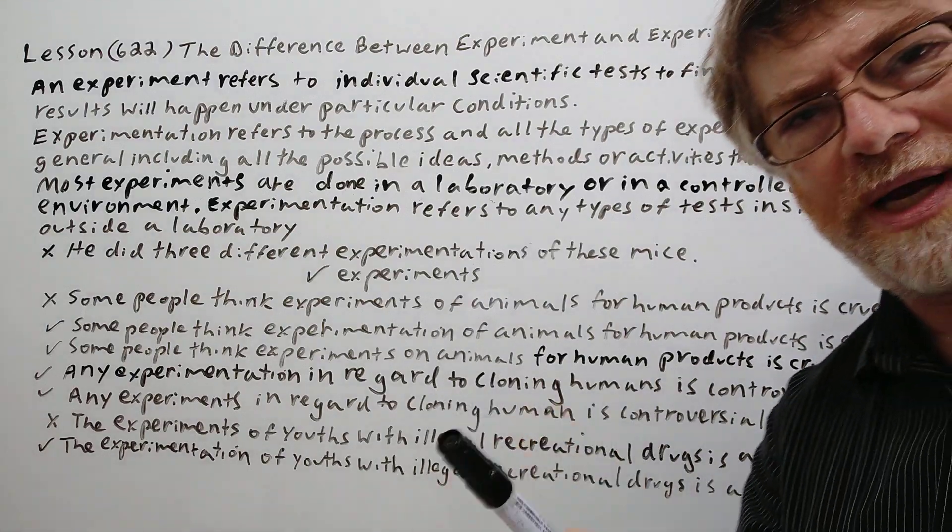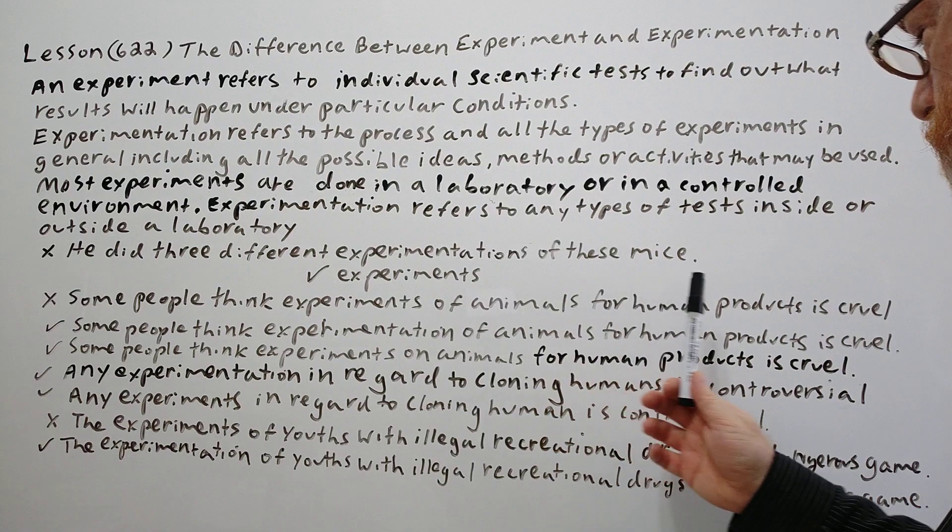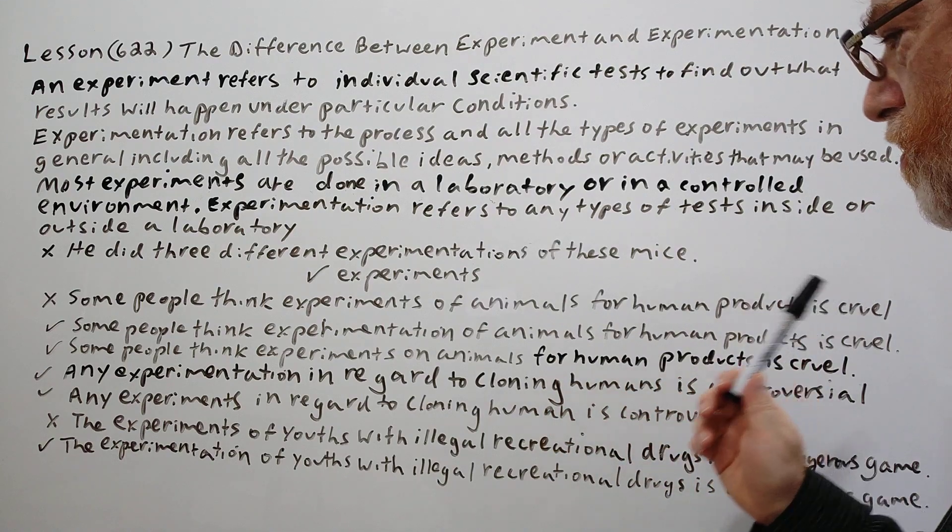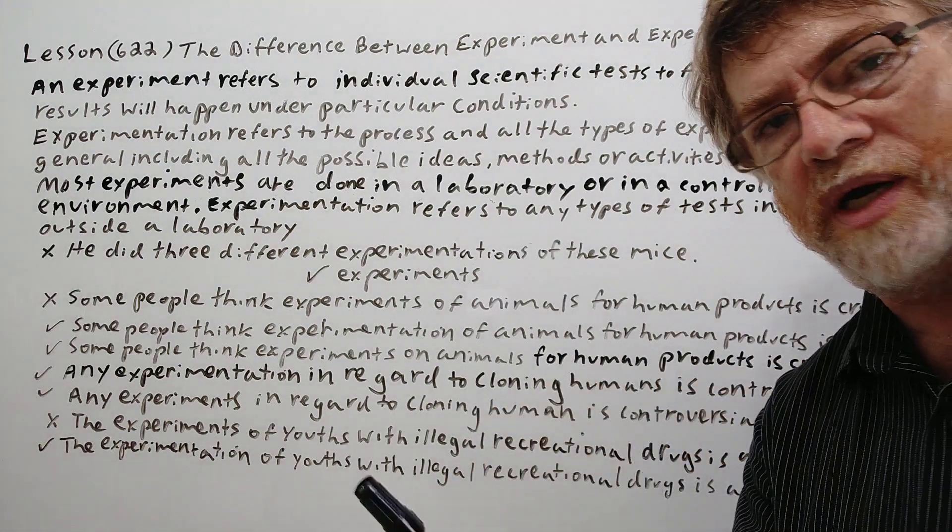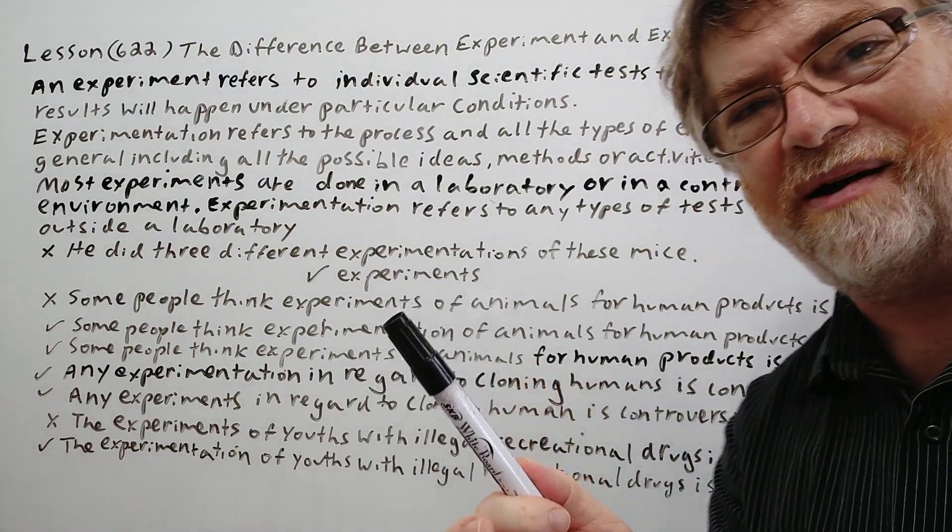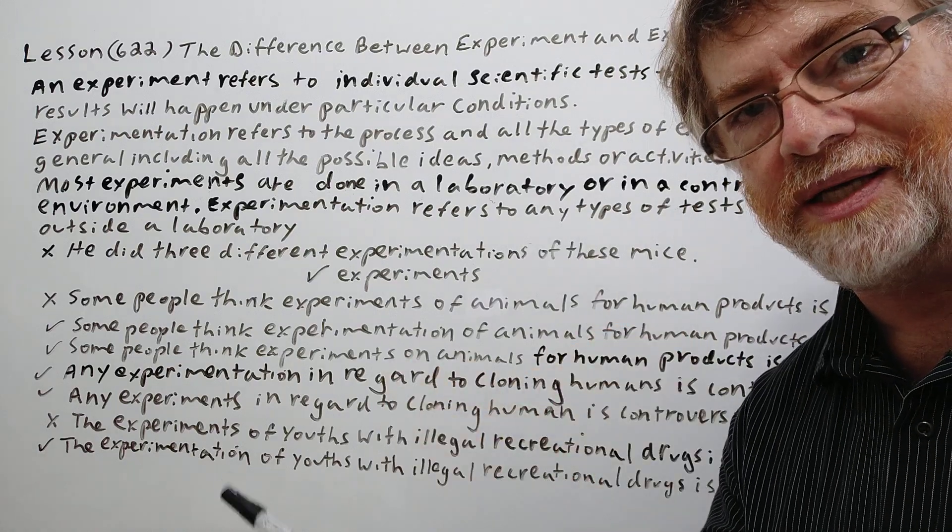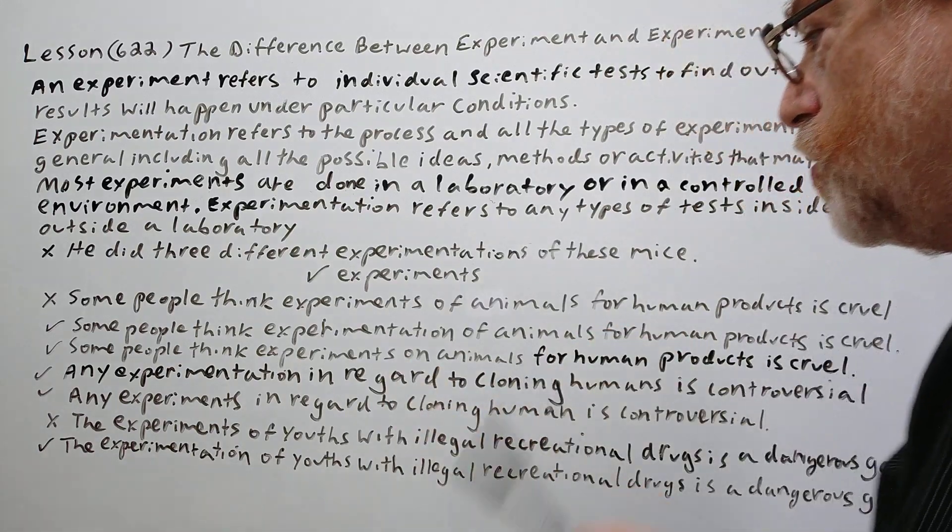Here's another example to help you distinguish it more. Some people think experiments of animals for human products is cruel. This sounds a little weird because with this sentence it sounds like the focus is on experimenting on animals where it's really not. The focus is actually on experimenting on the products but animals just happen to be used.